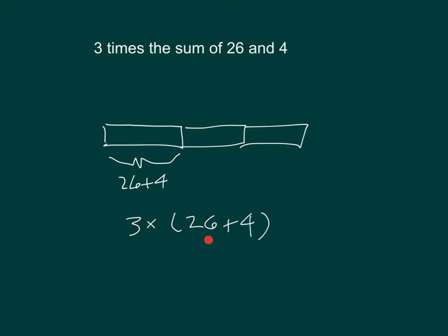Notice the parentheses are around 26 plus 4. If we were to evaluate this expression, it would be equal to 3 times 30, which equals 90. So not only did I write the expression, but I also evaluated the expression. So 3 times the sum of 26 and 4.